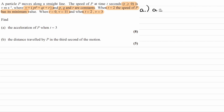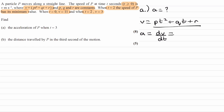So we have an expression for velocity: v equals pt squared plus qt plus r. We want to work out acceleration. Acceleration is the rate of change of velocity, or the differential of velocity with respect to time. If we differentiate this, we end up with 2pt plus q. So to work out what acceleration is, we need to find what p and q are.